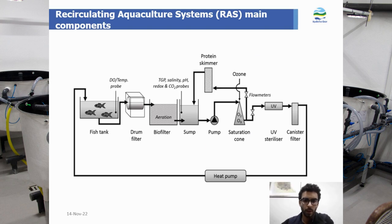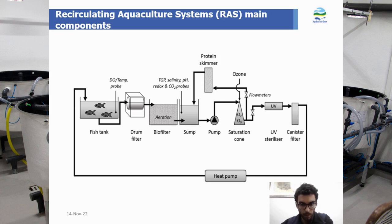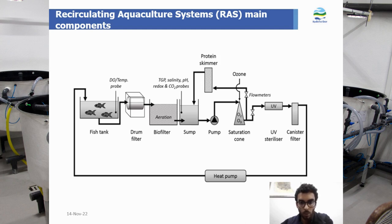This picture shows a graphical representation of all the pieces of equipment present in a recirculating aquaculture system. Starting from the sump where clean water is, a pump brings water through this branch to the saturation cone. Here we also have the ozone venturi, then to the protein skimmer and back to the clean sump. Another branch goes through the UV unit to the filter — in this case a canister, though other kinds of filters exist — then through the heat pump back to the fish tank. From the fish tank, the outflow passes through the drum filter and goes into the biofilter, and from there back to the sump.